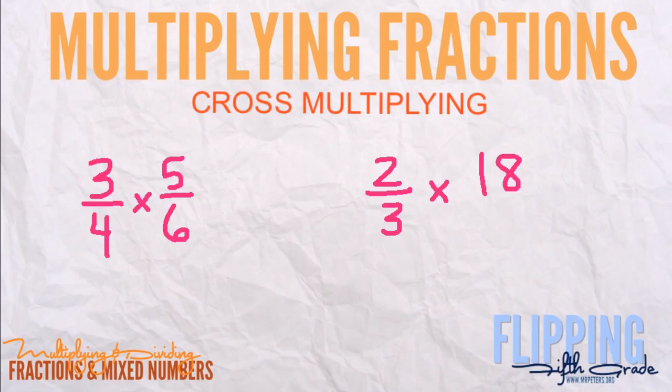Sometimes multiplying fractions can give you really big numbers, but we can use a method called cross multiplying to help with that. Right now we have three-fourths times five-sixths. When we say cross, we mean diagonal.